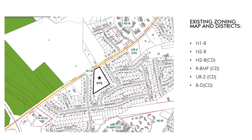Here we can see a current zoning map for the city of Charlotte. Our site is currently zoned N1B — neighborhood one B. In the general area of the site there are numerous zoning districts: there's neighborhood two, apartments to the northwest, as well as townhomes. There's R8 multifamily, which is a legacy zoning district from the previous zoning ordinance, as well as UR2.